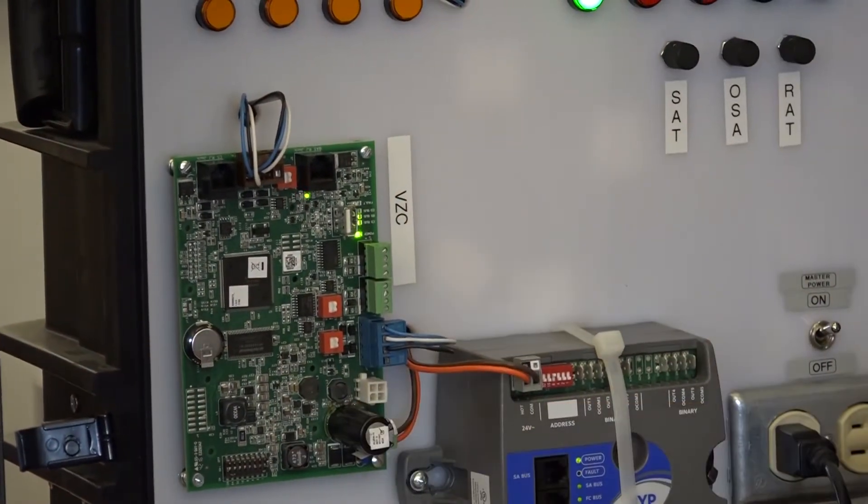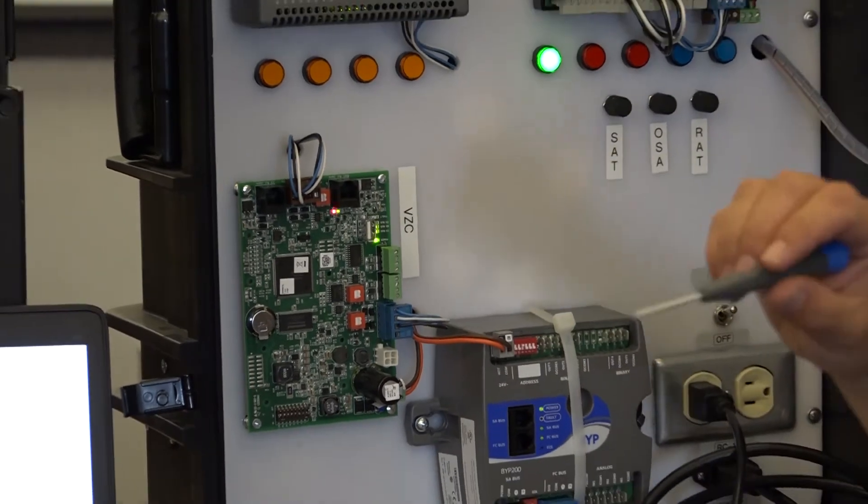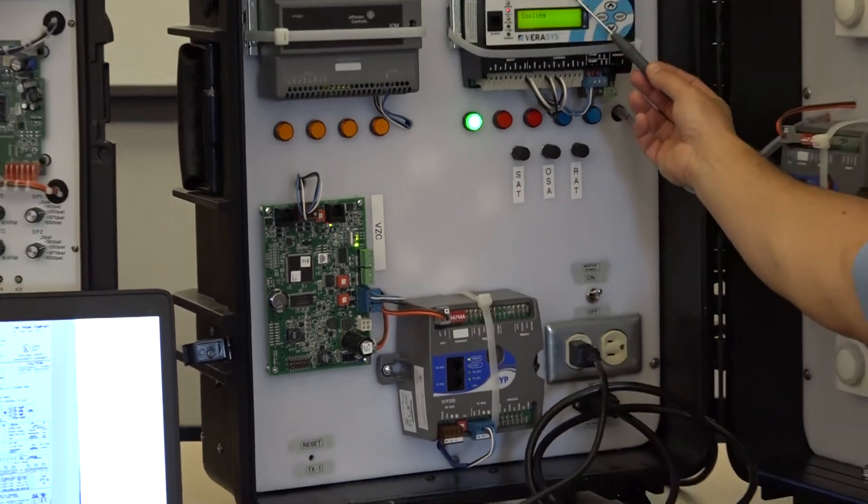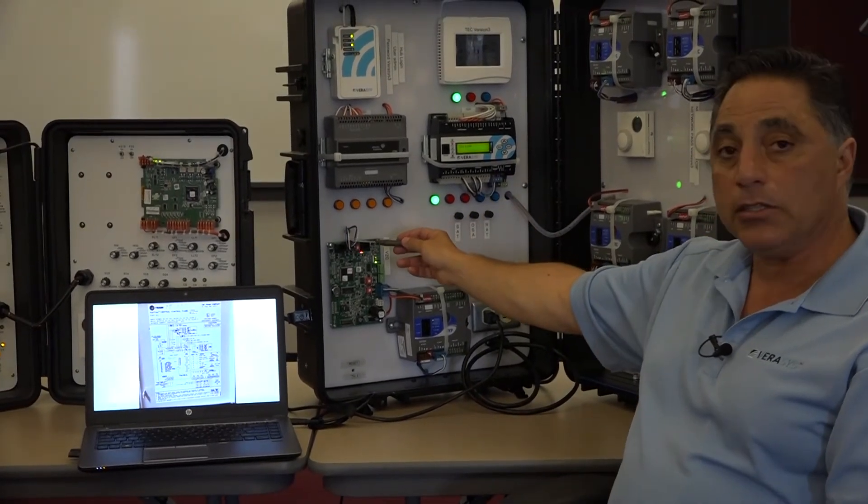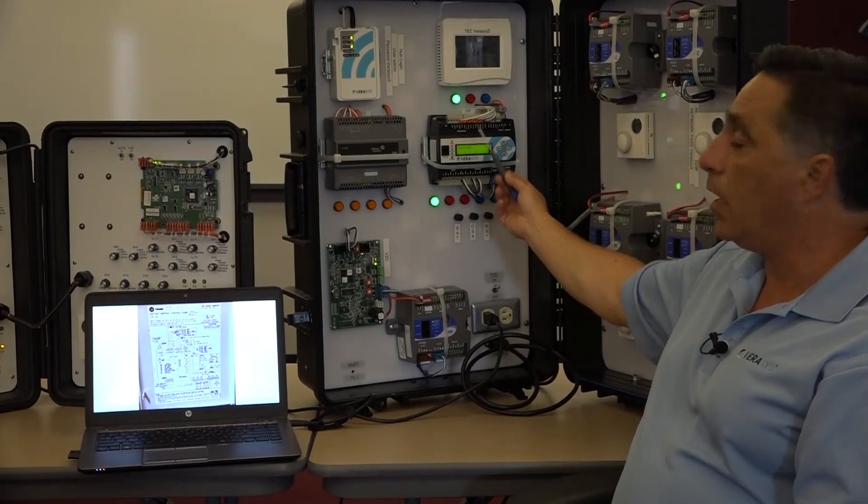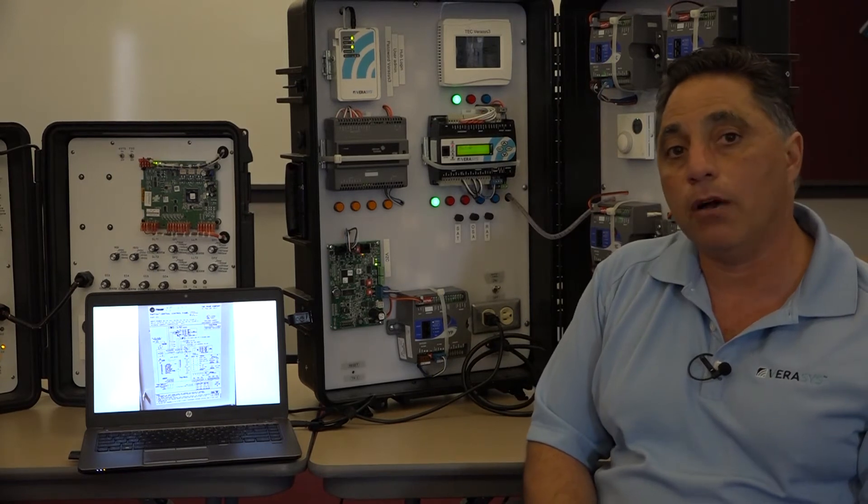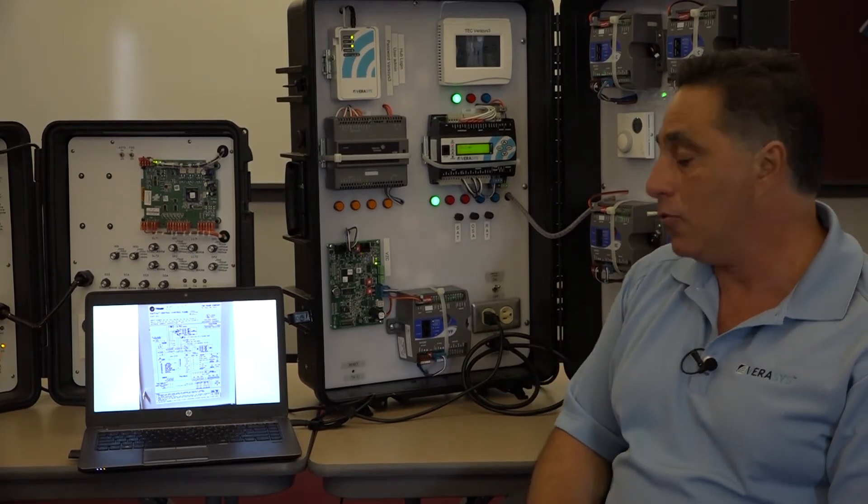And in the case of the job that I just talked about, these were the Trane units, we used what we call the VEC controller. And this VEC controller also landed on the same communication wire. And that's what's controlling the Trane rooftop for the changeover bypass system.